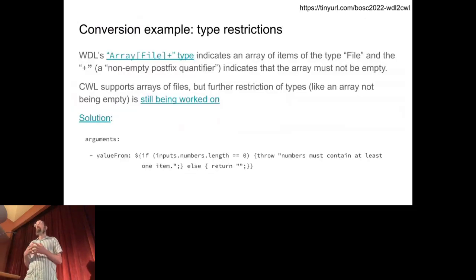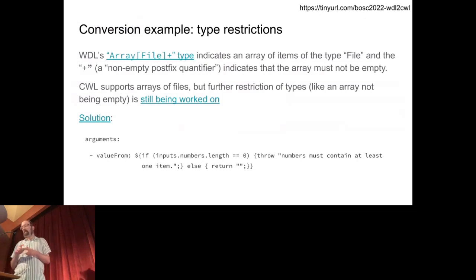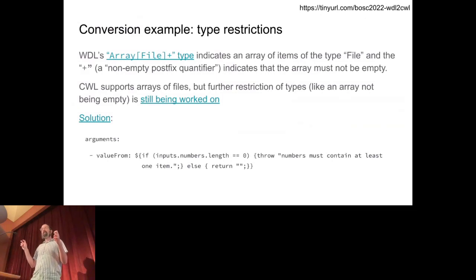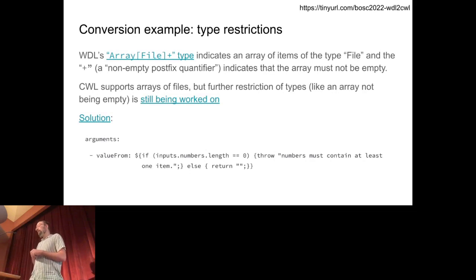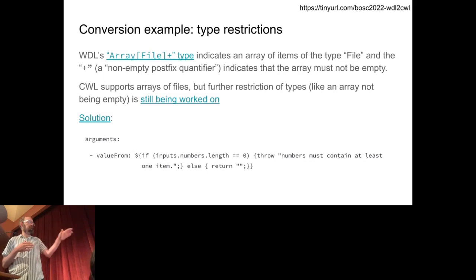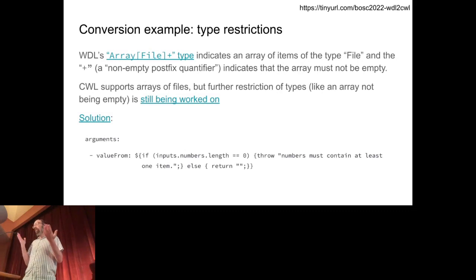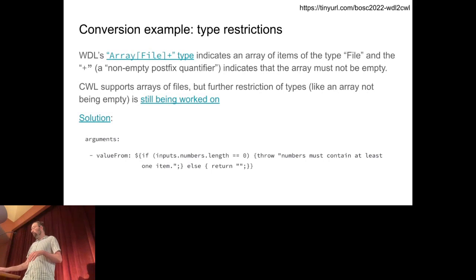As a more challenging conversion: WDL supports an array type where if you add a plus symbol on the end, it means a non-empty list — it has to have at least one item, a non-empty postfix quantifier. CWL supports arrays of files, but currently in the official standard we don't yet have restrictions beyond that, though they're being planned. We work around this by doing an evaluation at runtime to check the length — if the length is not greater than zero, we throw a helpful exception. You can do this today in CWL; it's an advanced trick.